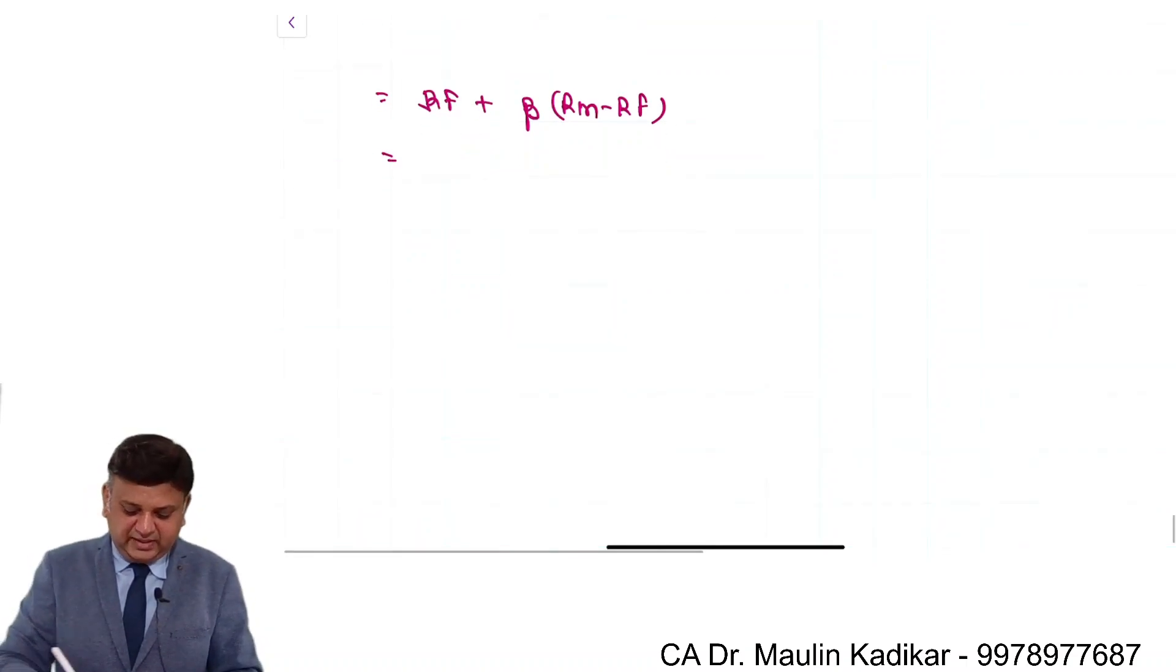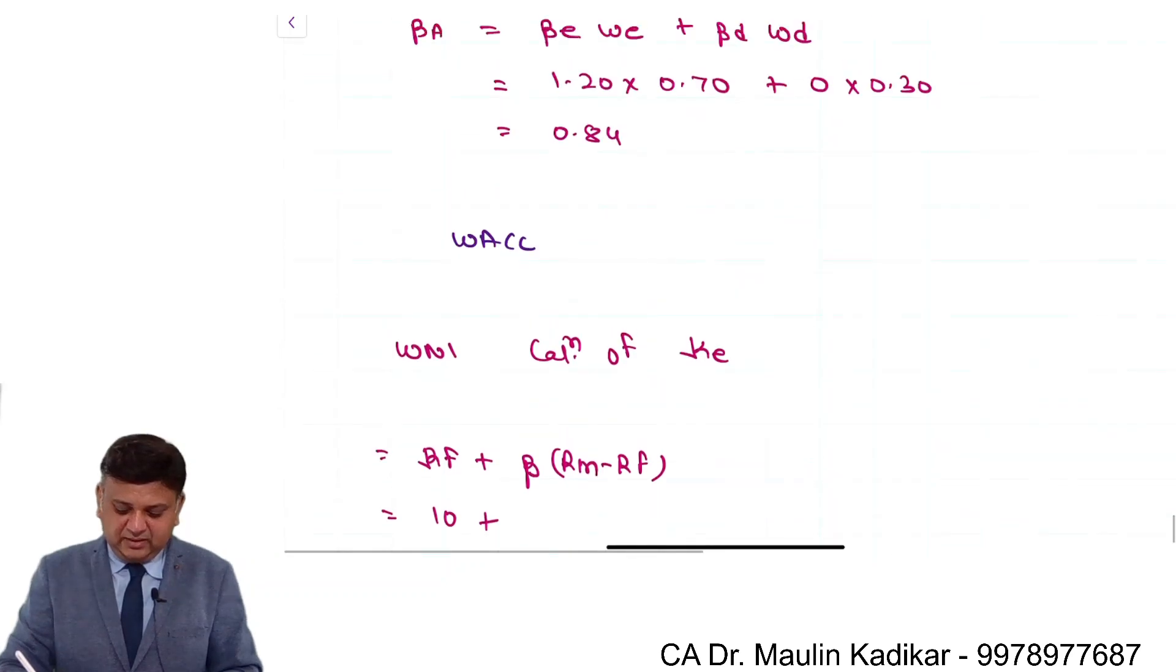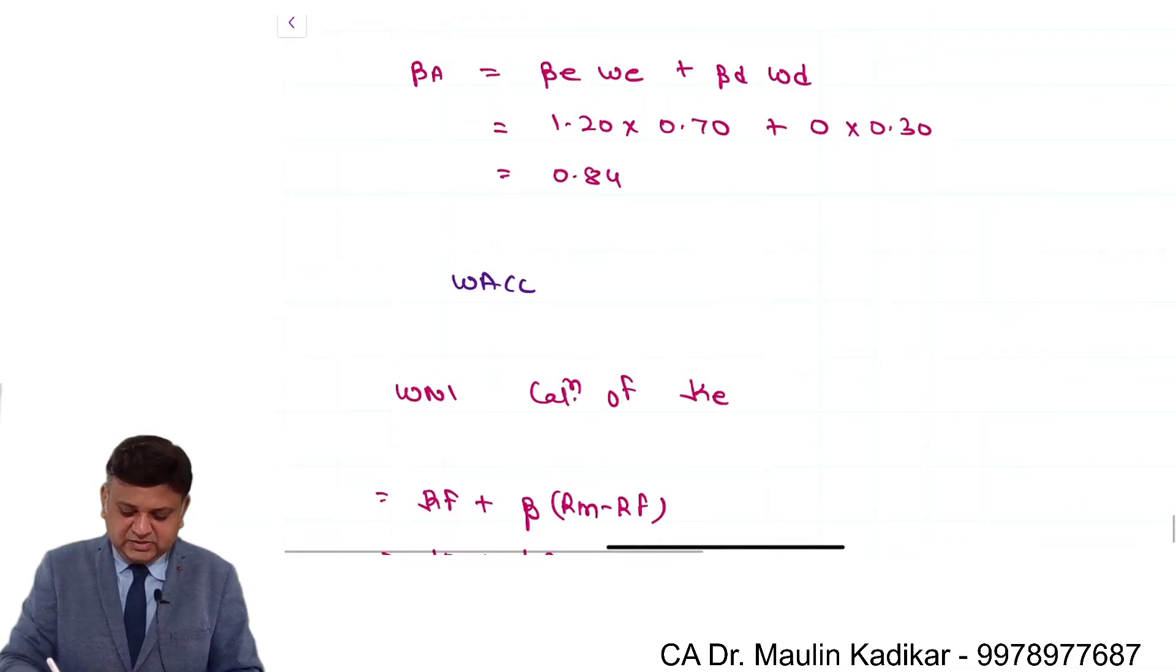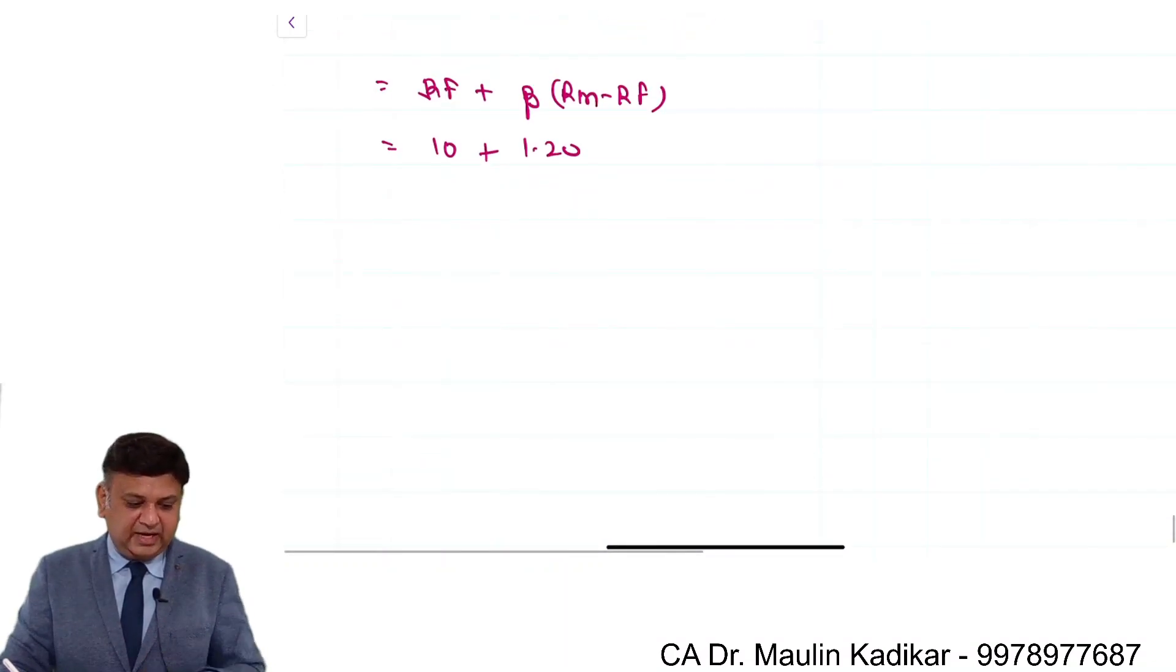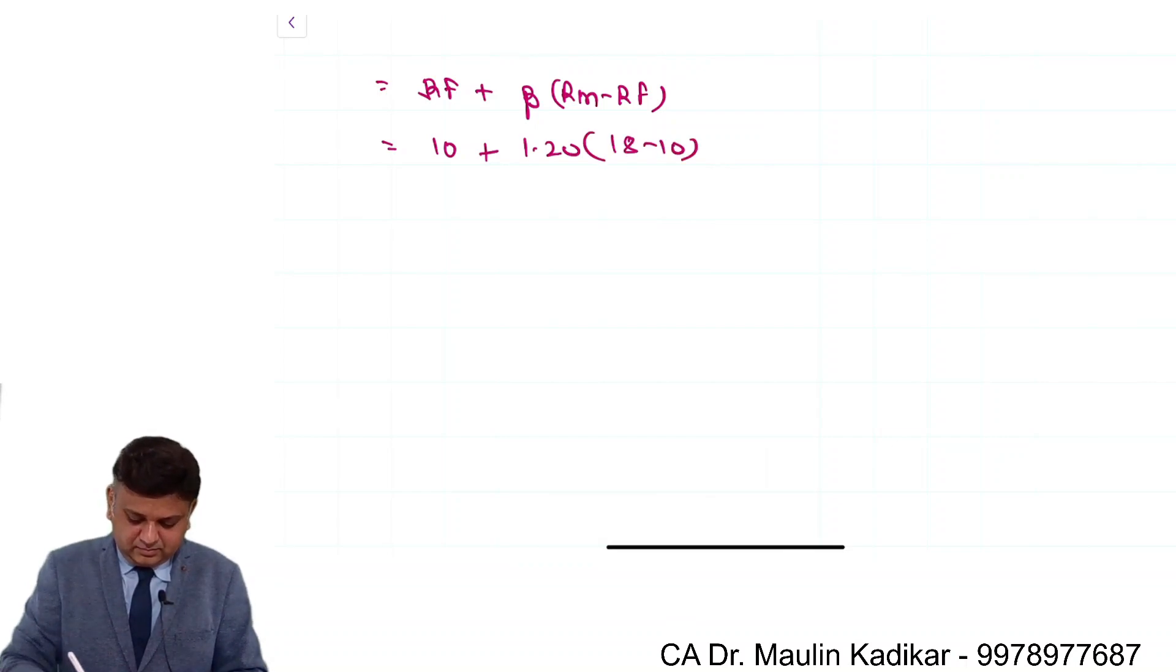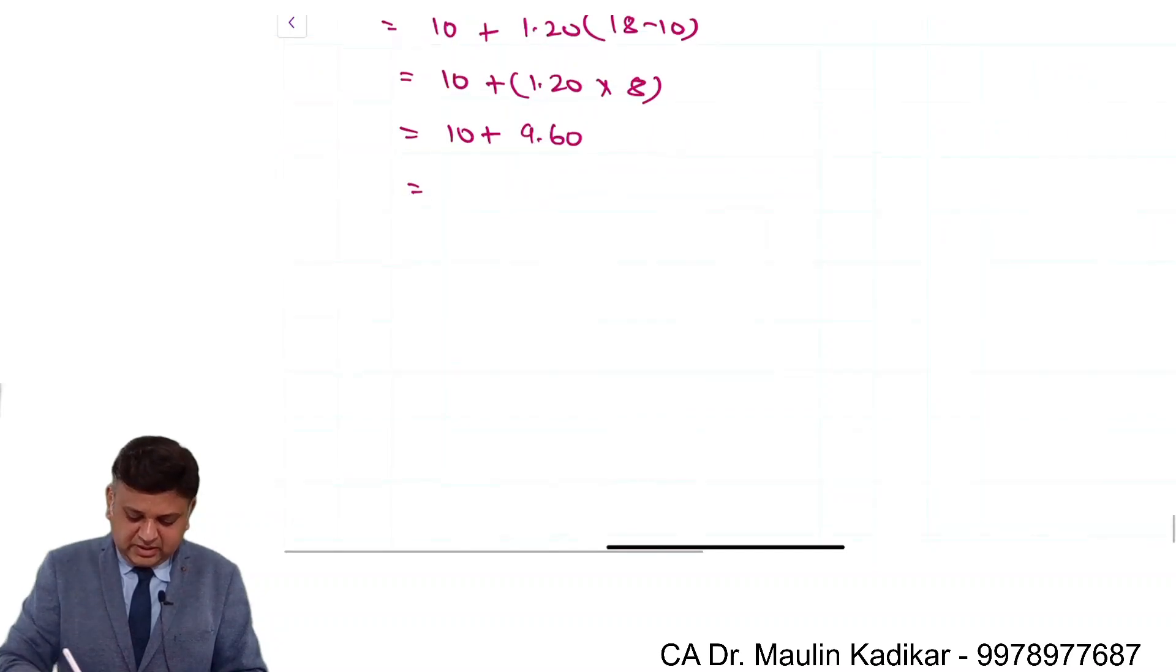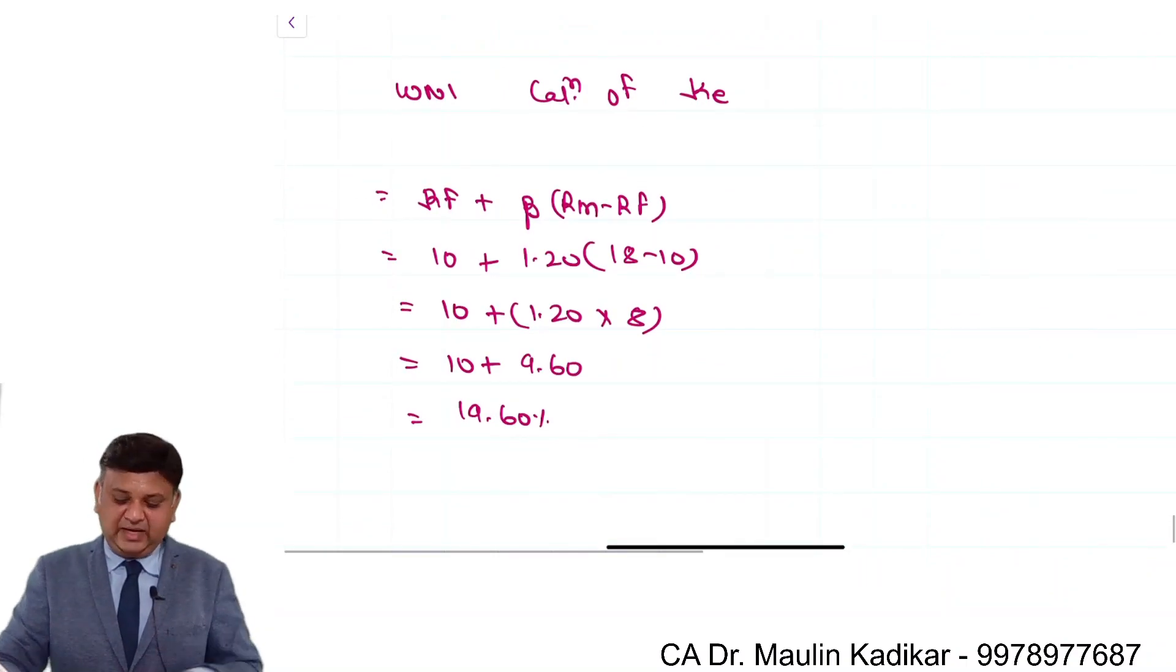Risk-free rate of return is provided as 10 percentage plus beta is 1.20. That is beta of the equity into RM minus RF. That is 18 minus 10. So 10 plus 1.2 into 8 is 9.6. That comes to 19.6 percentage. This is the way the Ke can be calculated.